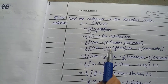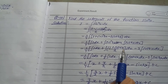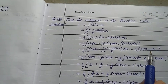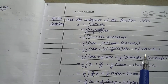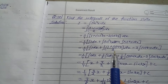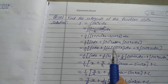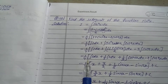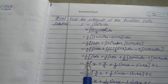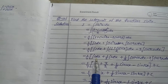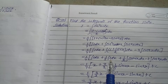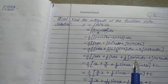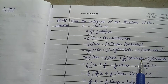Substituting, I equals (1/4) times [integration of 1 dx plus integration of (1 + cos4x)/2 dx minus 2 times integration of cos2x dx]. Dividing both terms by 2 and distributing the integration: (1/4)[∫1 dx + (1/2)∫1 dx + (1/2)∫cos4x dx - 2∫cos2x dx].